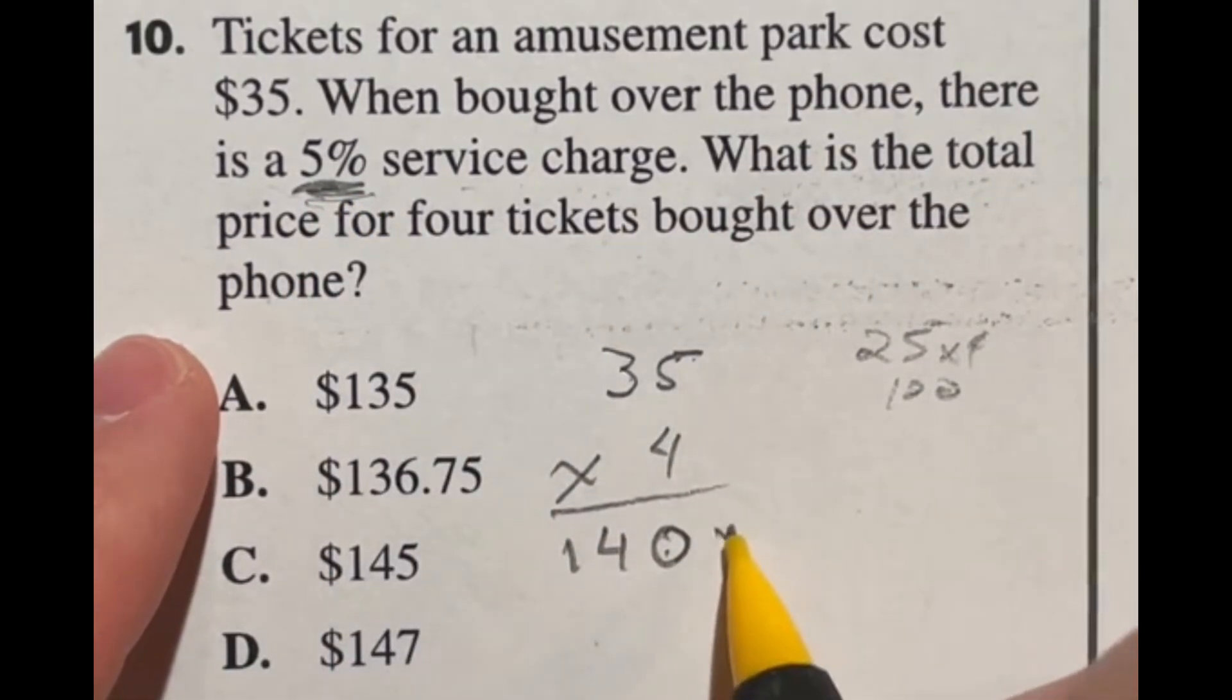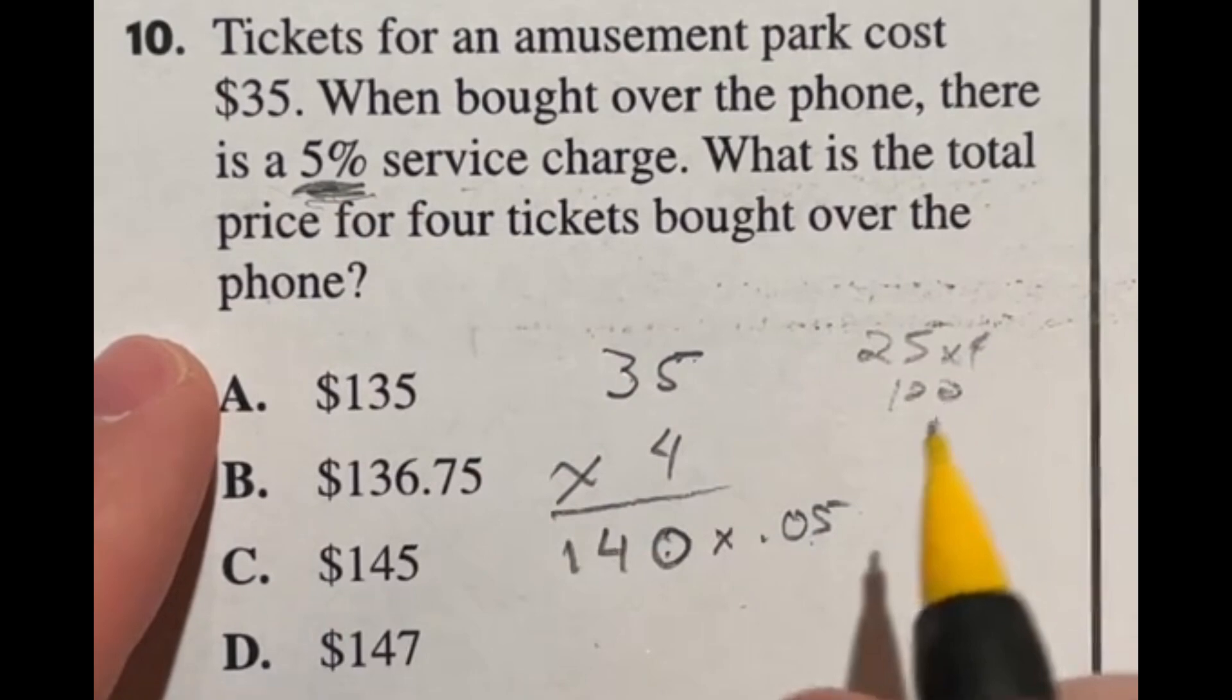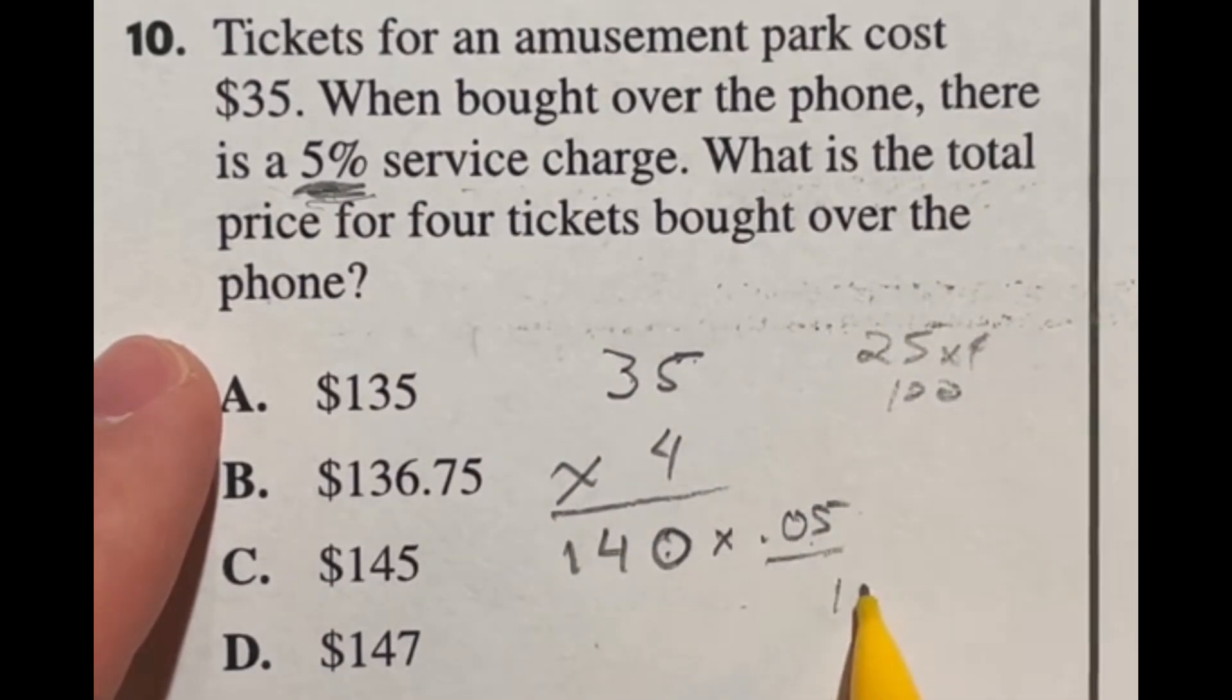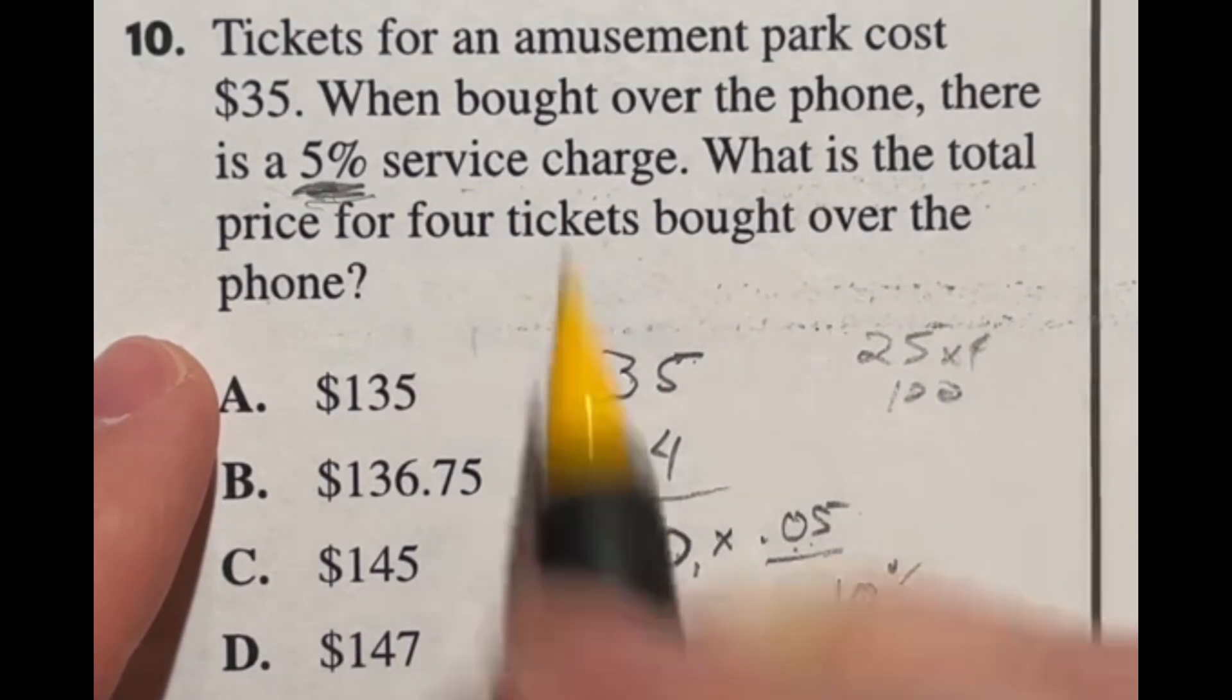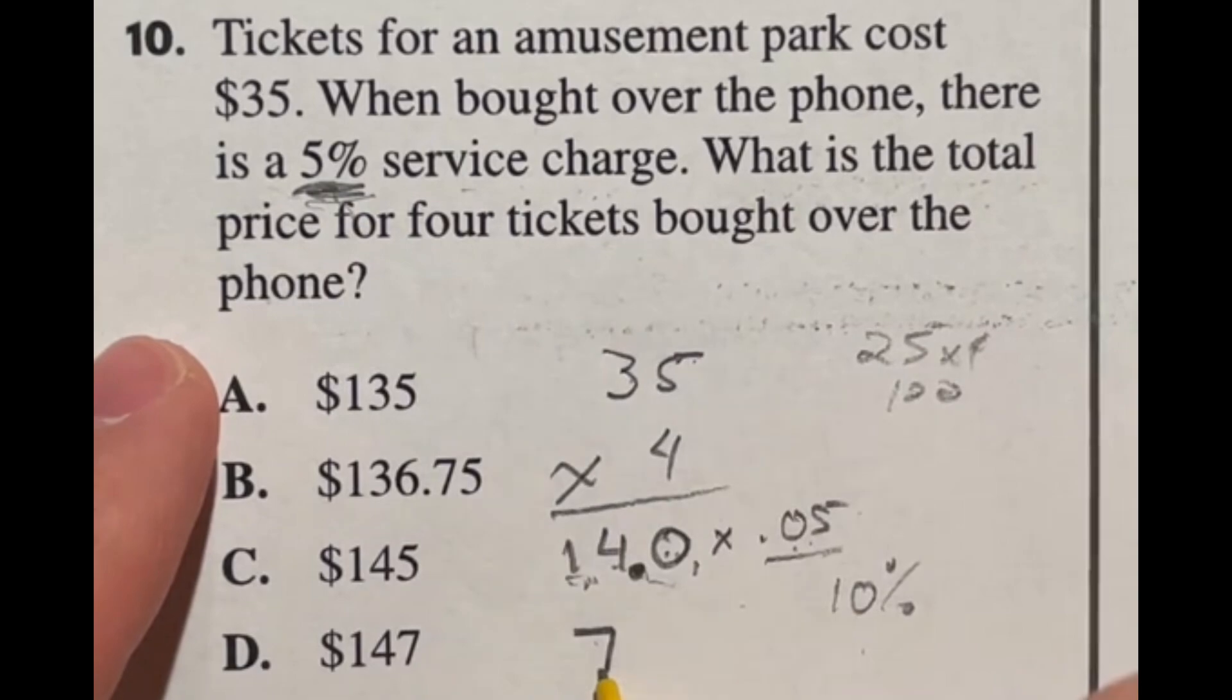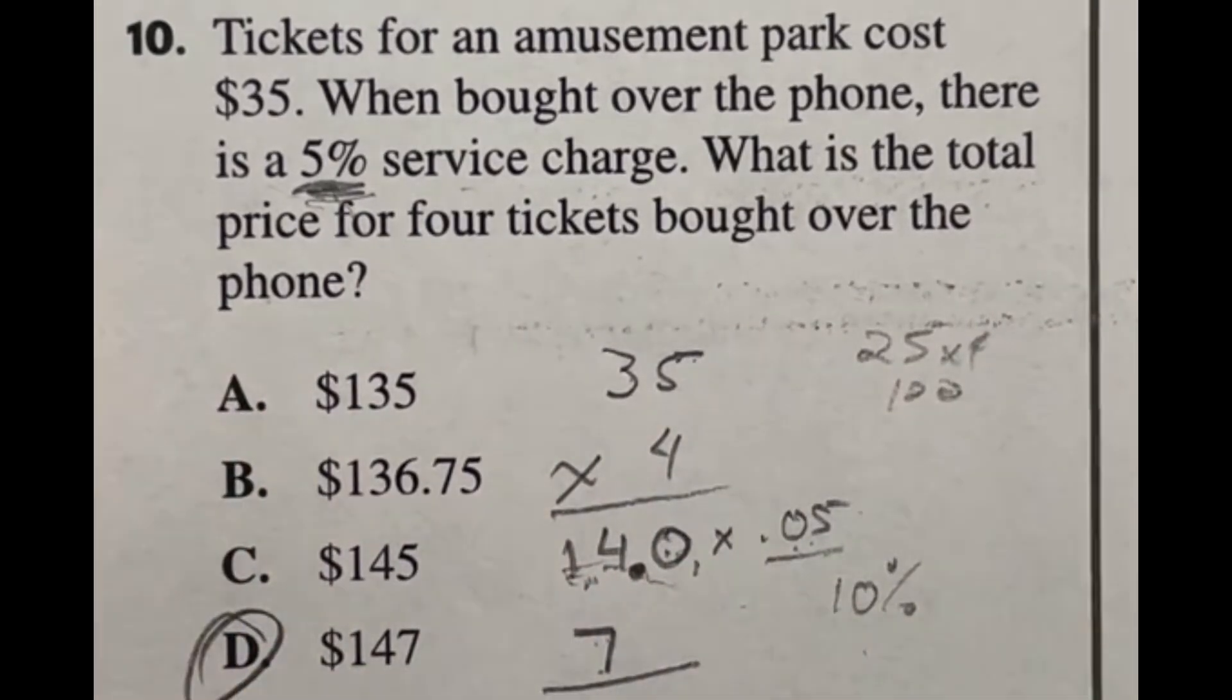Again, you can always just multiply this by 0.05 to see how much that actually is because that's the decimal form of 5%. But in this case, I know that 5% is half of 10%. And if you watched my last video, you saw 10% is always really easy because you just move the decimal place one time to the left. So 10% of 140 is 14. So 5% of 140 would be half of 14, which would be seven. So in this case, a 5% service charge added to the original 140 would be 140 plus seven, giving us a total of $147, which is answer D.